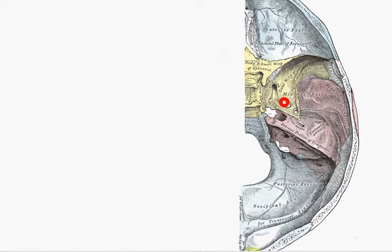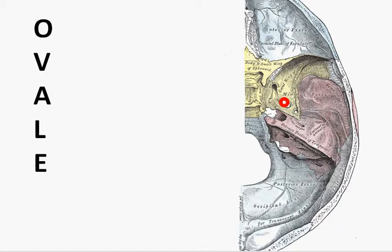There's this foramen here highlighted in red. What is it? Well, it was the foramen ovale. And very simply, what runs through it or is associated with it?